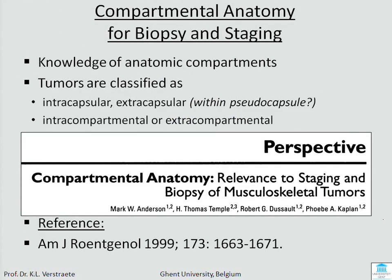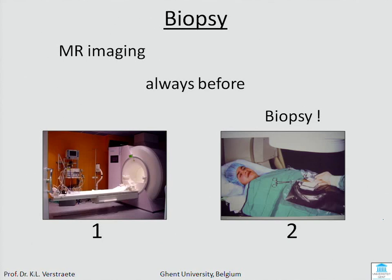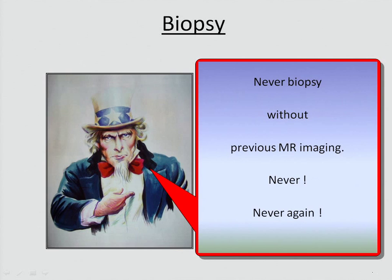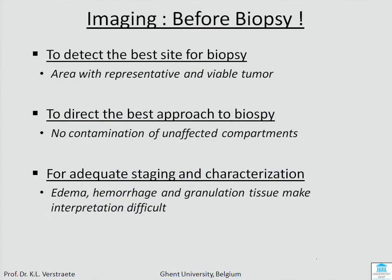Just as with bone tumors, the order is first MRI and then biopsy — not the other way around. We want to show colleagues where the most active part of the tumor is and how to approach it. If we see the patient after biopsy it's very difficult — you have hemorrhage, edema, and you lose the characteristics needed to name the tumor. That's why we want imaging before biopsy.